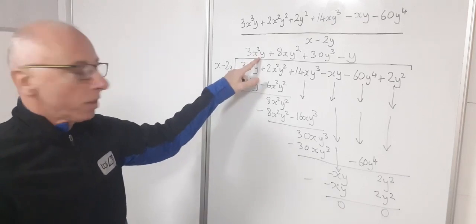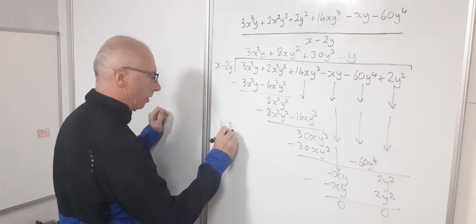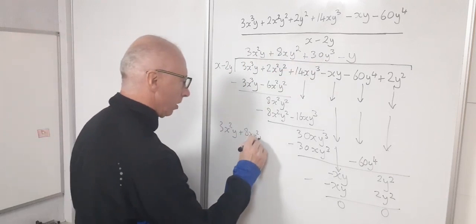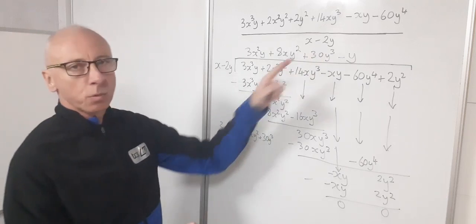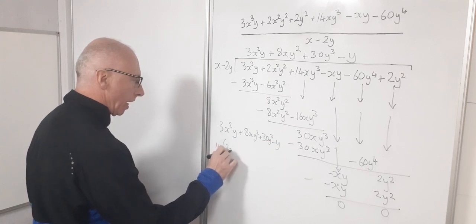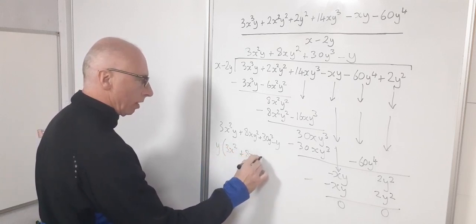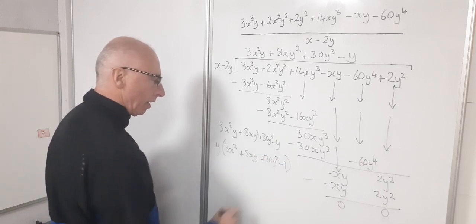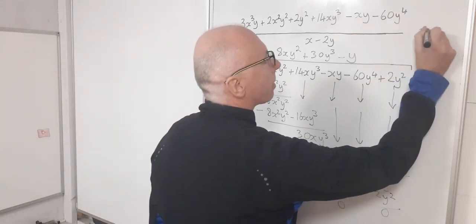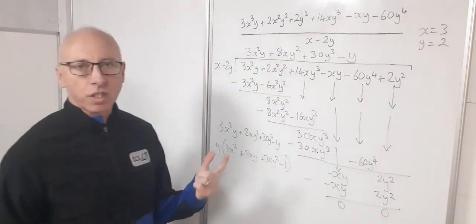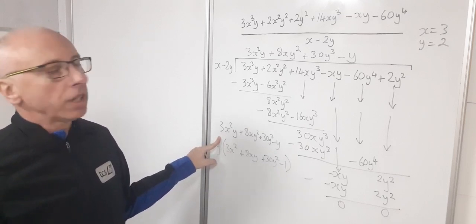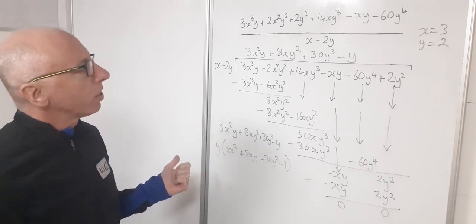So my answer is 3x²y plus 8xy² plus 30y³ minus y. And you'll notice here there's a y term in every single one, so we can factor this out and go y(3x² + 8xy + 30y² - 1). That is also corresponding to my answer. And if you wanted to you could plug in some variables. Let's say x equals 3, y equals 2. Just as an example, plug that into here and check your answers and see if you get the same answer. And you should get 388. So I'll leave that as something for you guys to check.